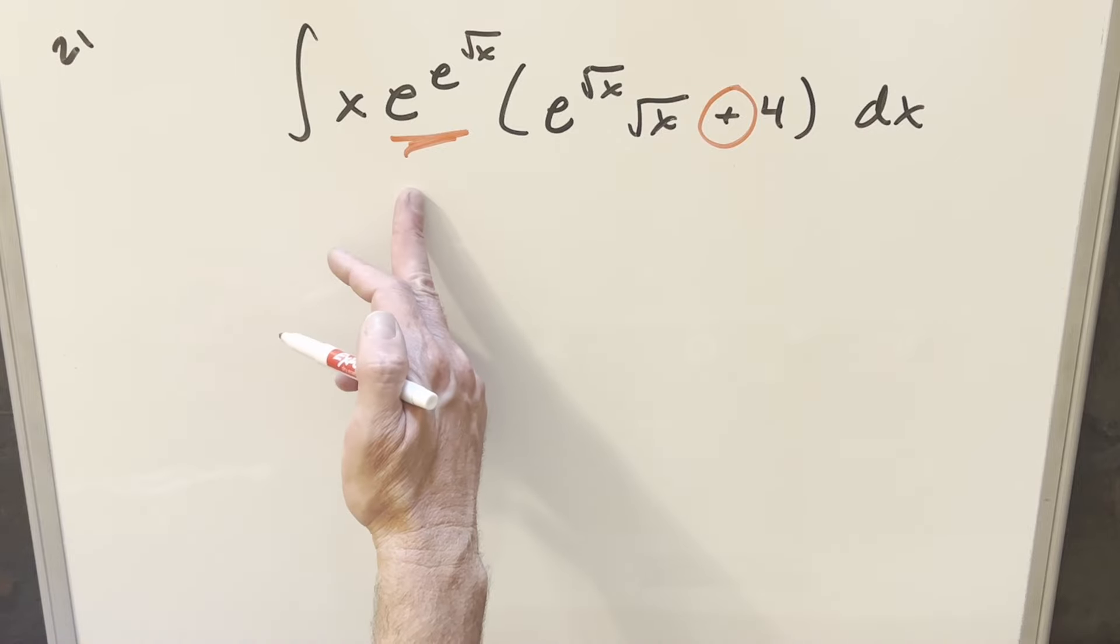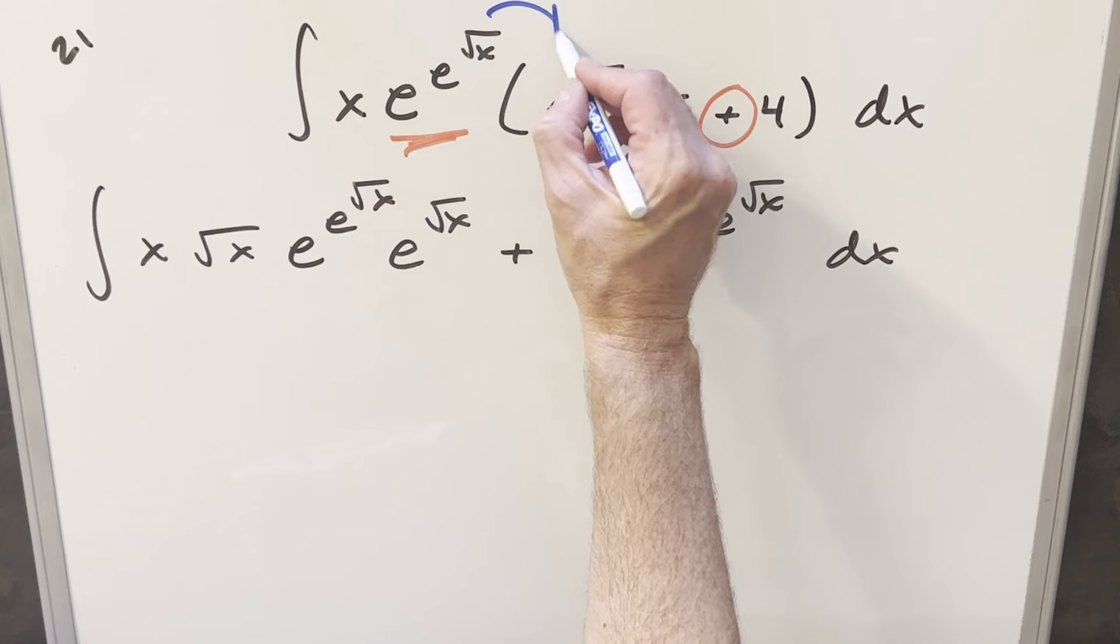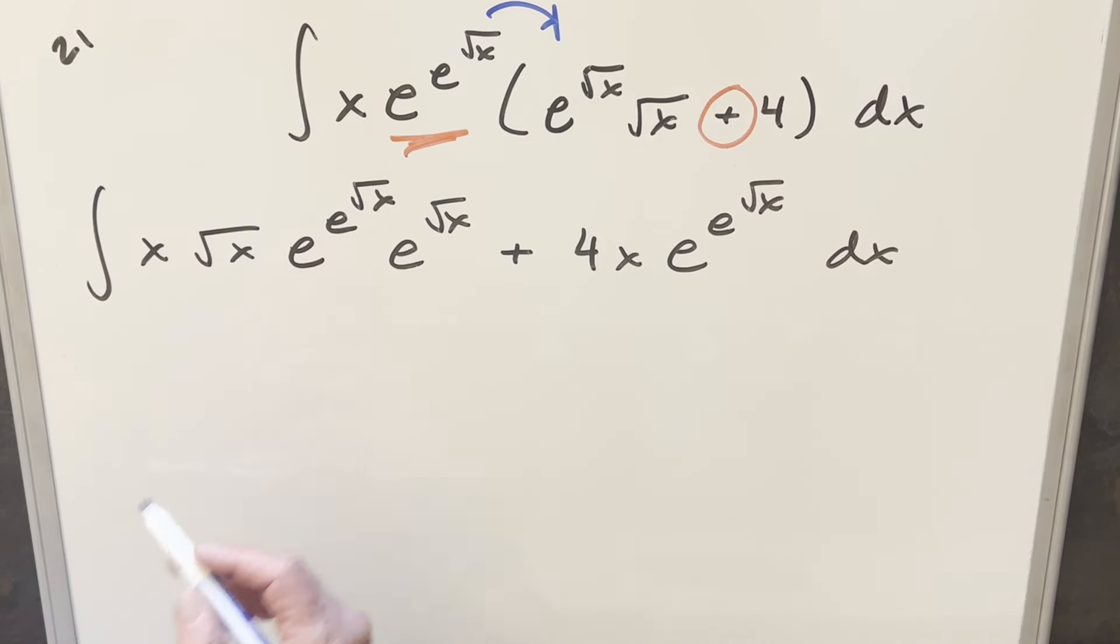Now I've distributed everything out and notice I didn't really simplify anything because I'm not sure how this is going to work yet. I could combine these because we've got the same base here. I could also combine these because we've got the same base. The thing I'm interested in is actually the most complicated part of this.